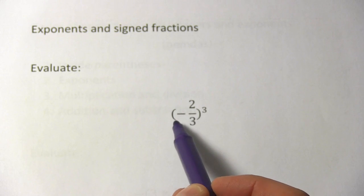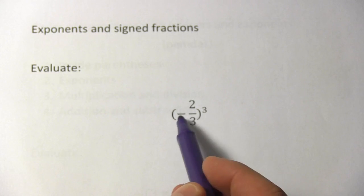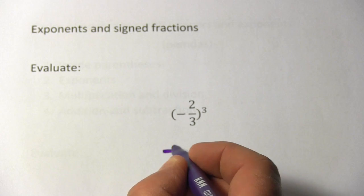So let's deal with the negative sign first. Since that's inside the parentheses, that's going to be raised to the third power. Since that's an odd power, the negative sign is going to stay, so our answer is going to be negative.